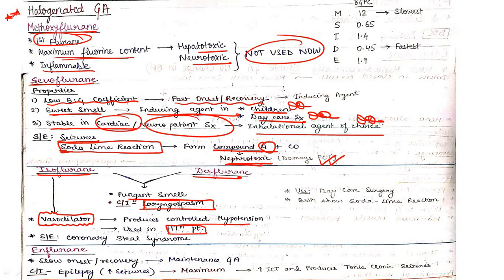Side effect associated with isoflurane is coronary steal syndrome, which I've already explained in our CVS video. Now coming to enflurane.